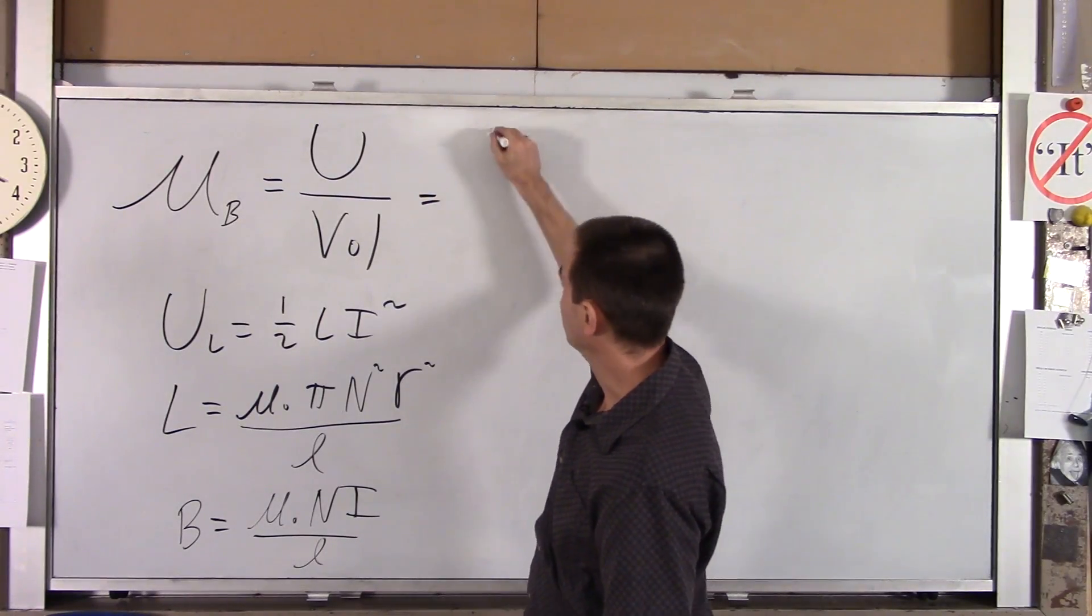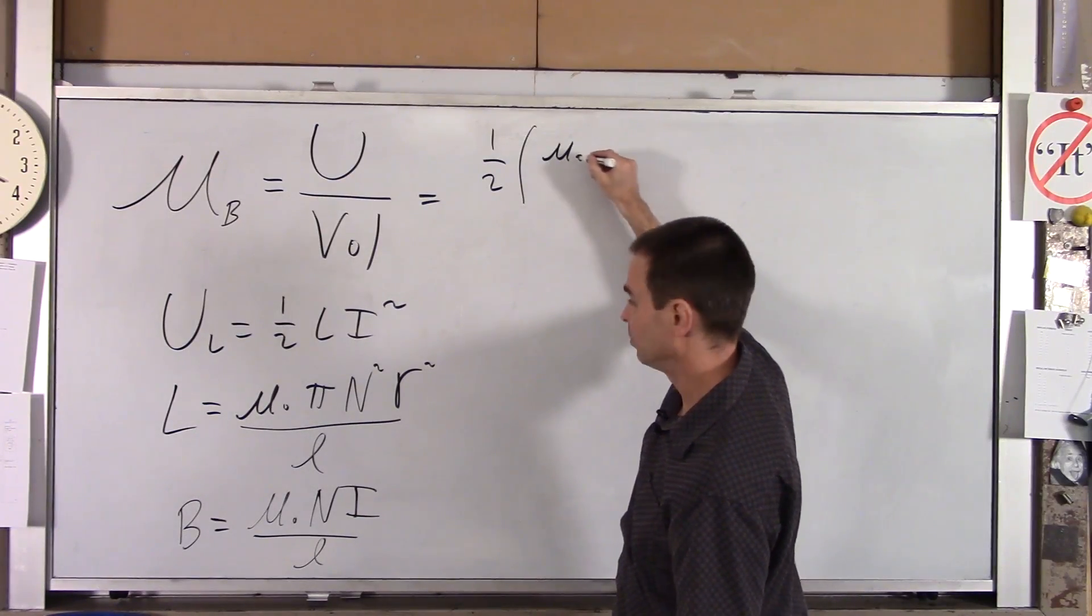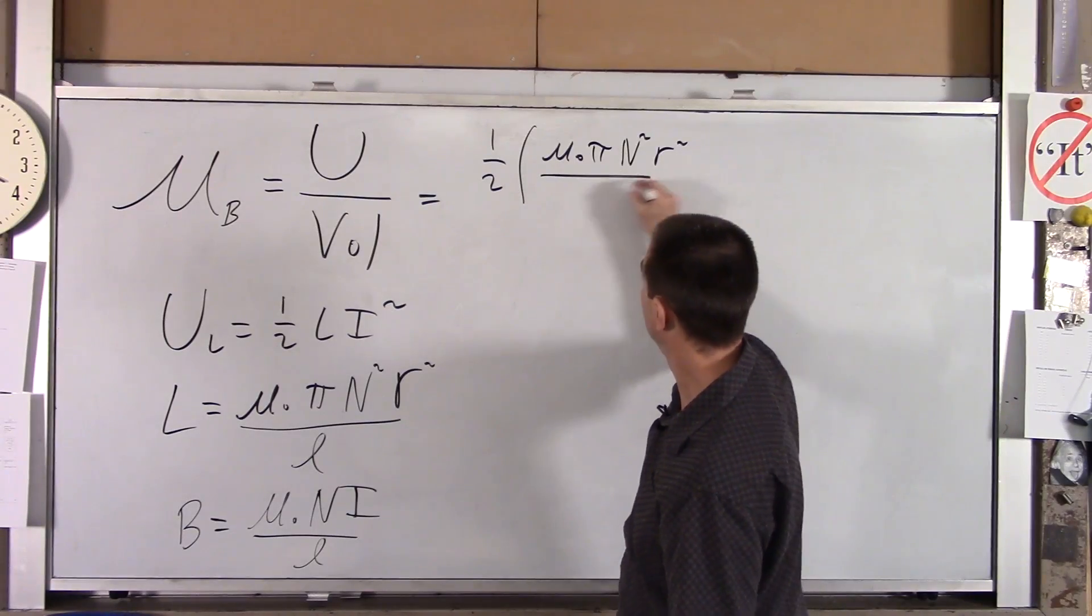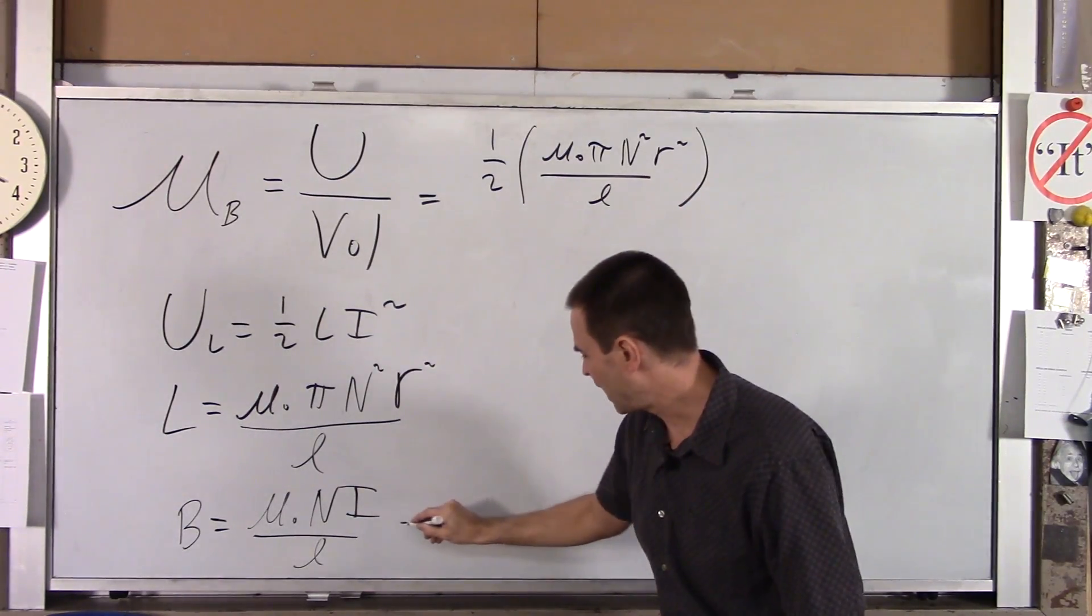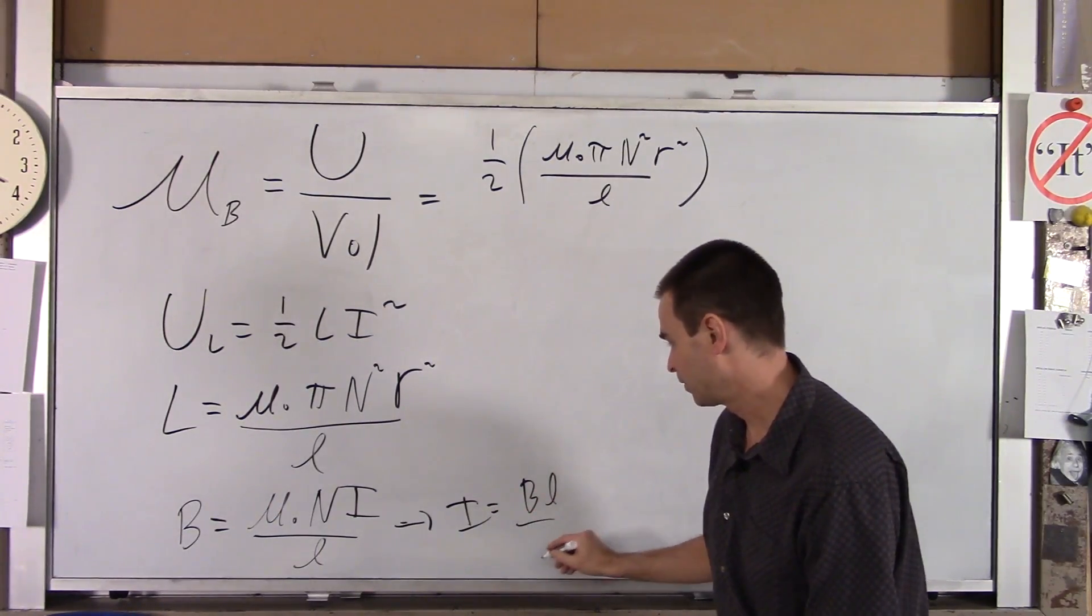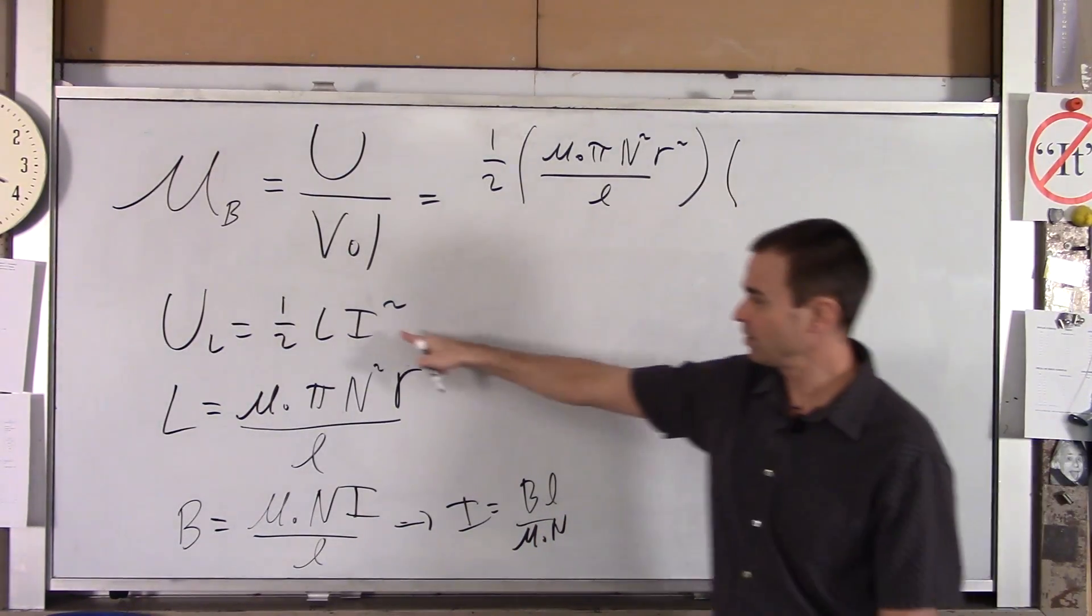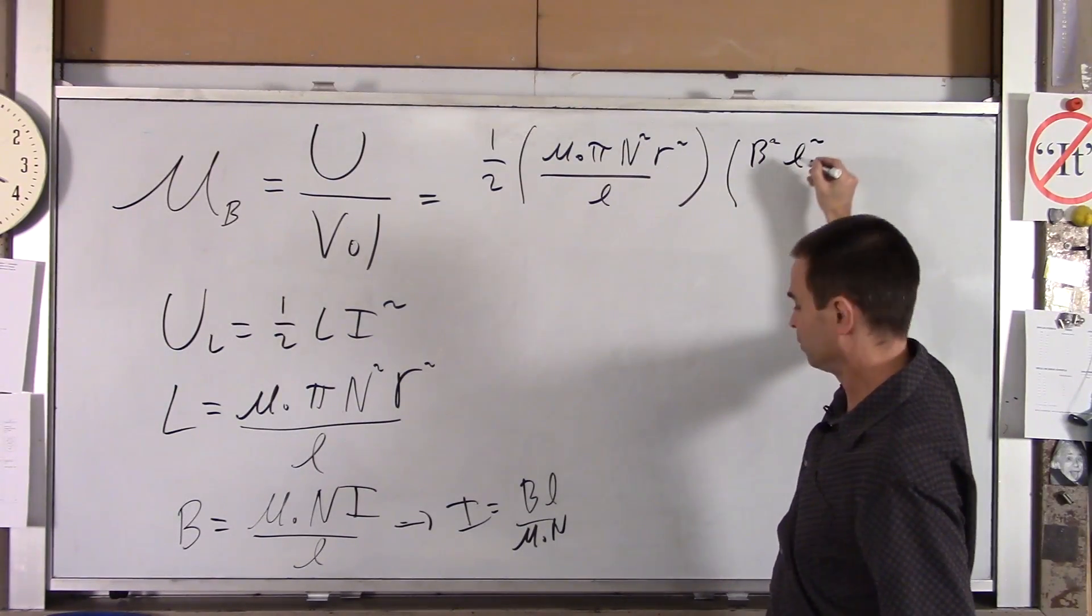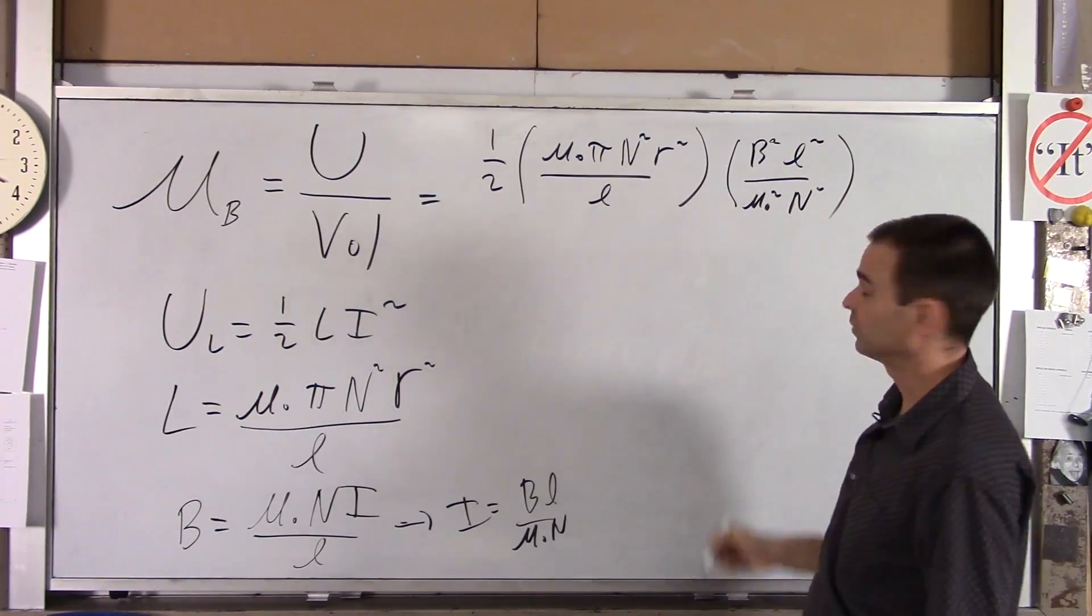So this equals potential energy, which is one half L, which is all this stuff here. So I'll make that substitution. μ naught π N squared R squared over L, times I squared. If I solve this for I, I will equal B times L over μ naught N. So I've got to put that here and I've got to square it. So this becomes B squared L squared over μ naught squared N squared, everything's squared there.